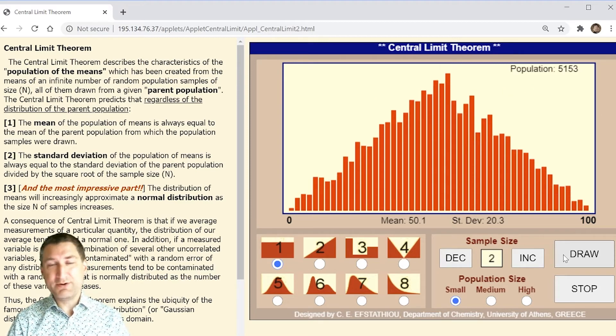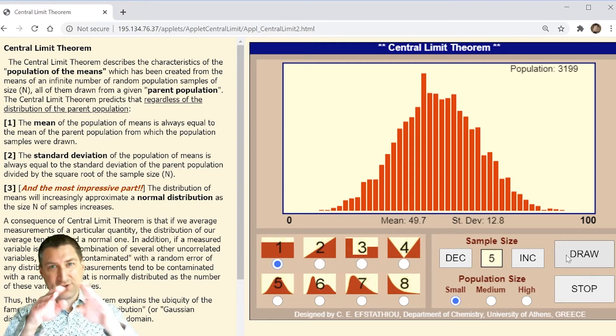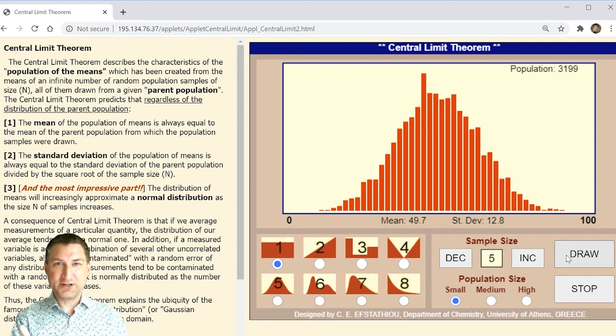What happens if I add two uniform random variables together? Now the sum of those things looks kind of triangular. I'm more likely to get values in the middle. What happens if I add five of those things together? Now things are looking like that kind of bell curve.